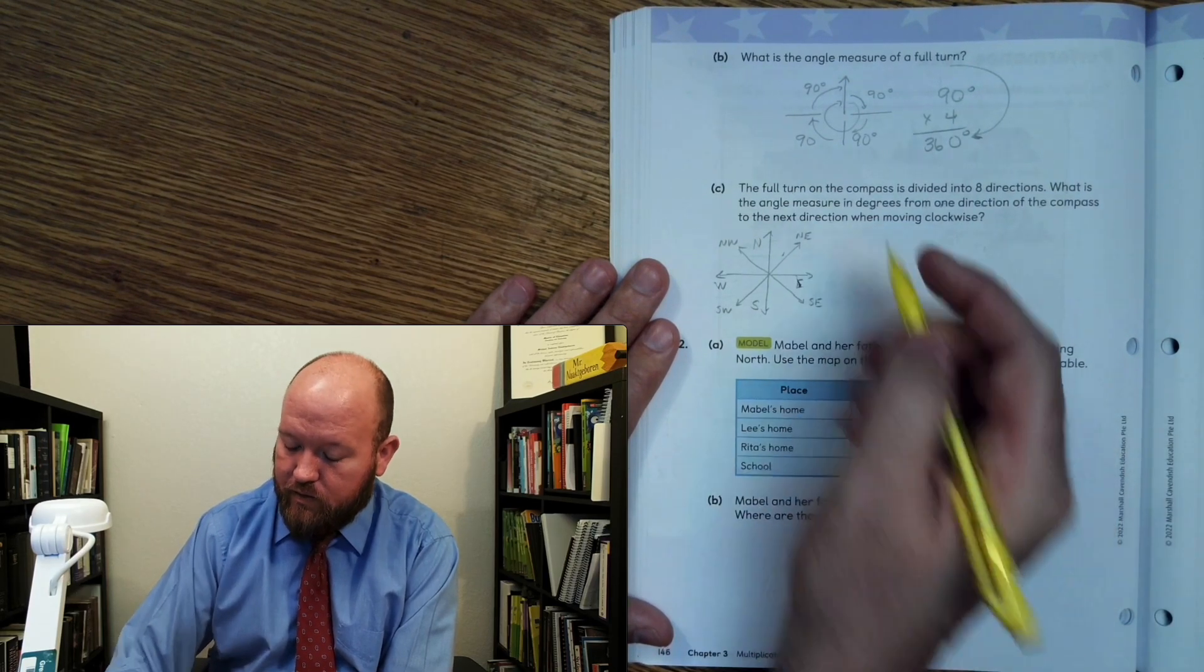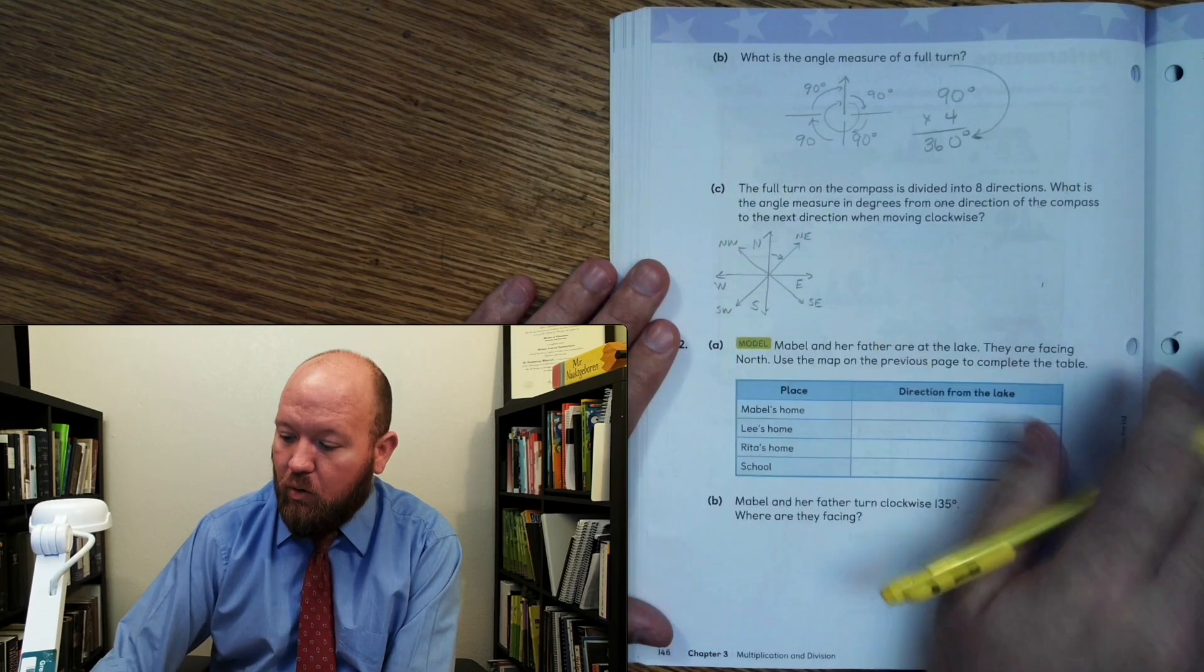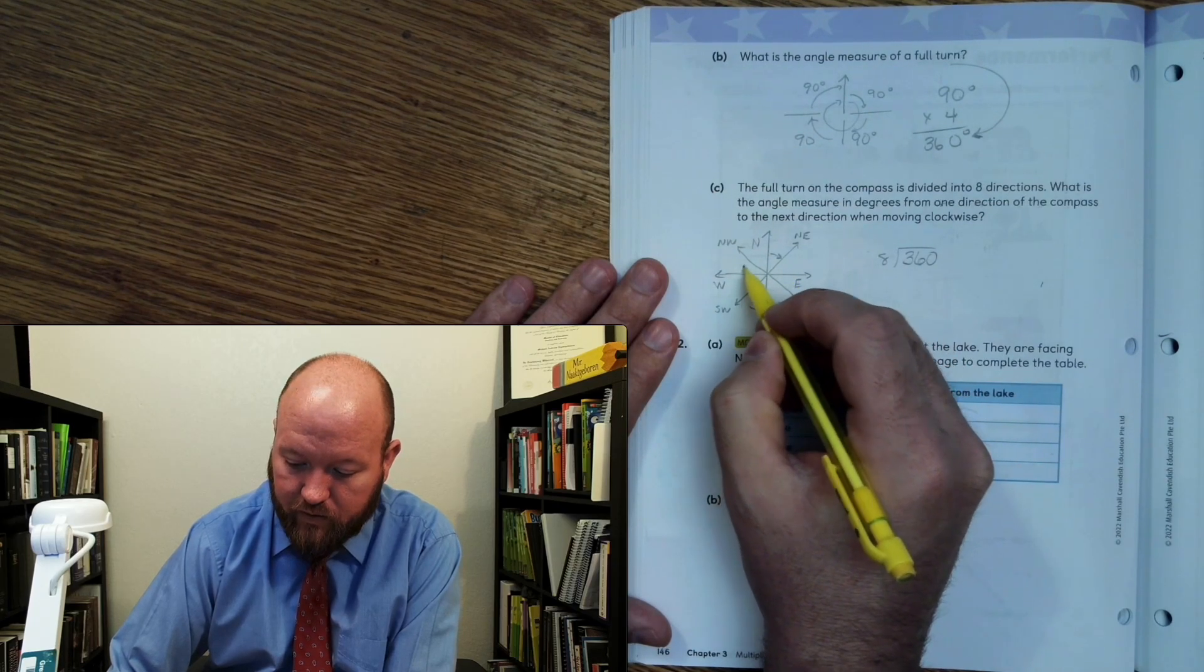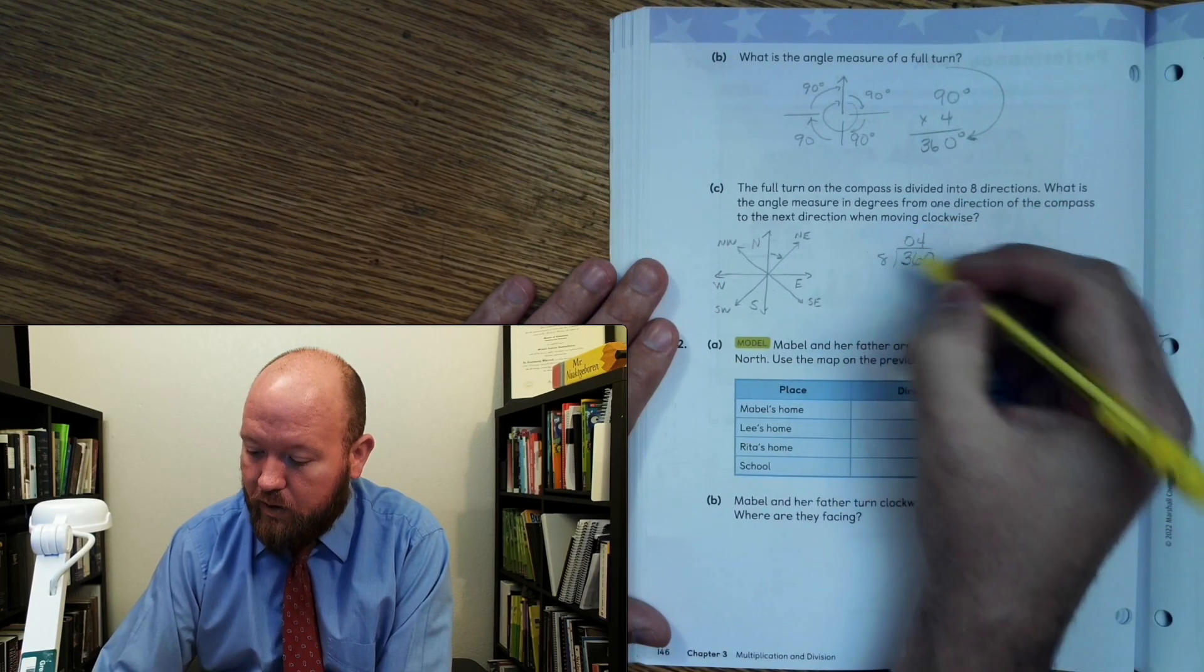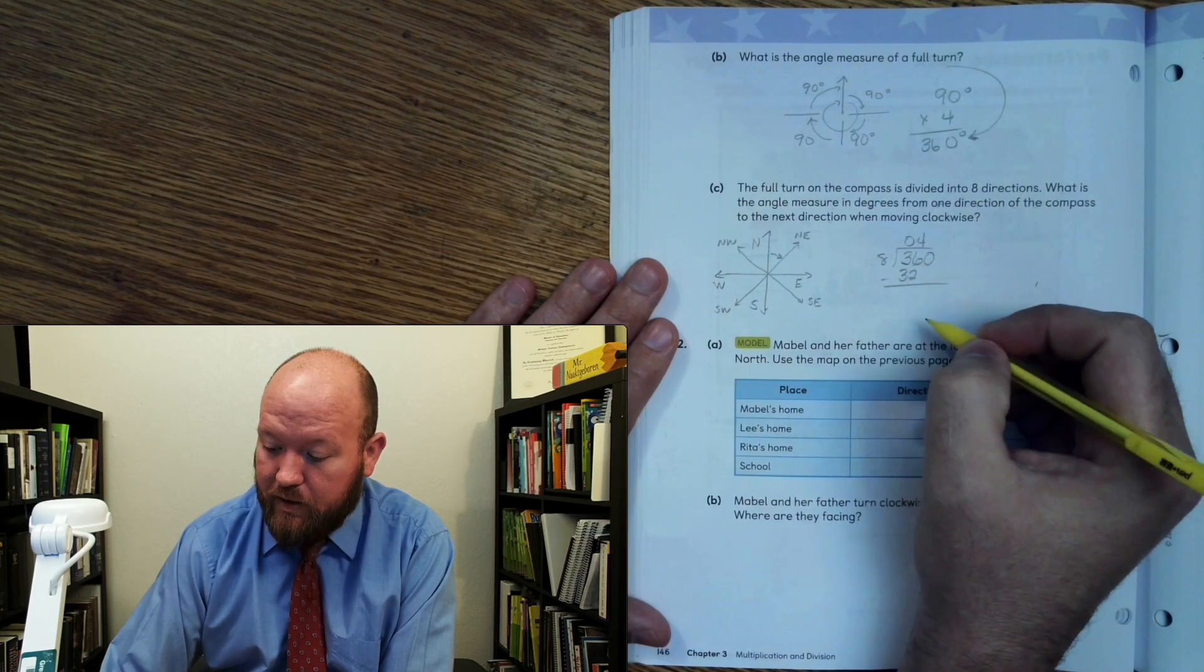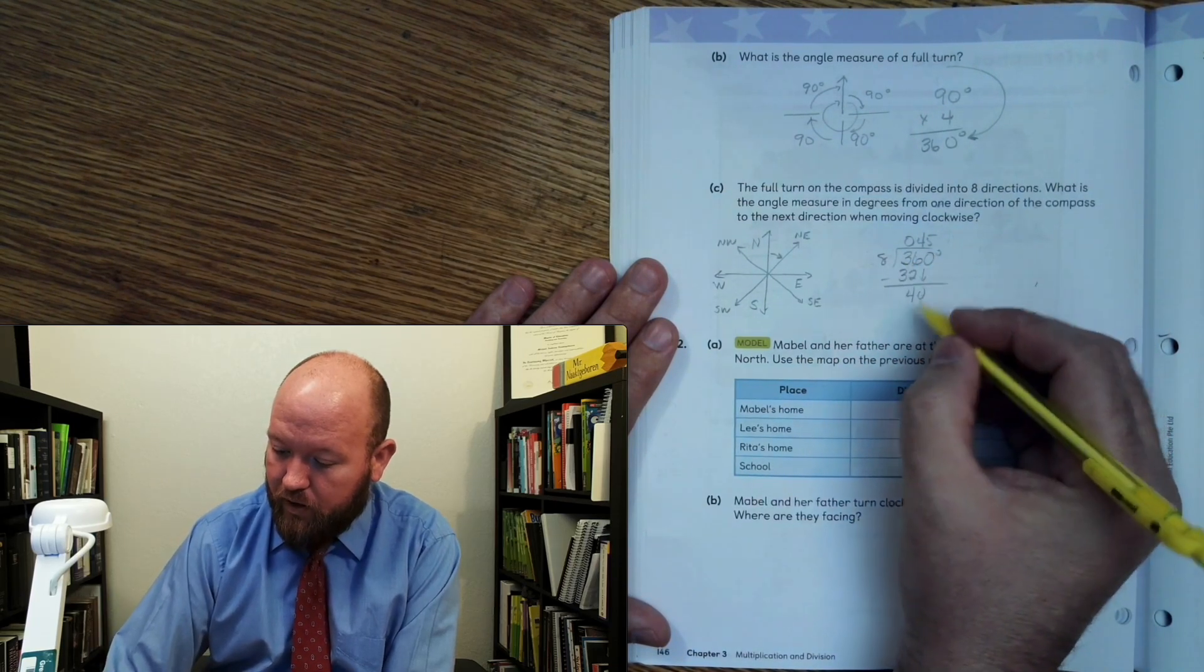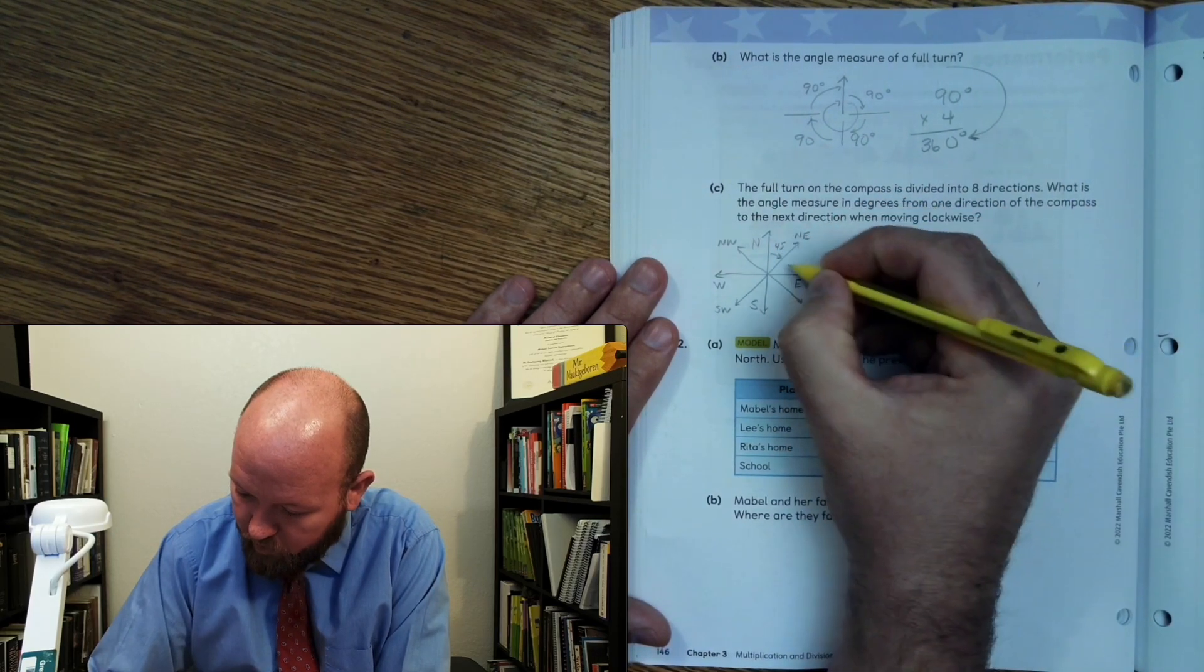So what is the distance from here to here? Now, we actually already figured this out, didn't we? We figured this out on the last page. But what we could also do is we could take 360 degrees and divide it by 8 because there's 1, 2, 3, 4, 5, 6, 7, 8 parts. 8 goes into 3 zero times. 8 goes into 36 four times. 4 times 8 is 32. 36 minus 32 is 4. What do I do next? Bring down the 0. 8 goes into 40 five times. 5 times 8 is 40. 40 minus 40 is 0. So we get 45 degrees.